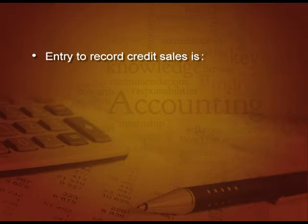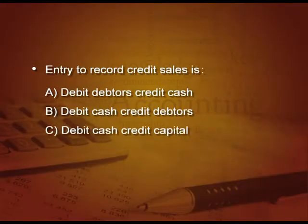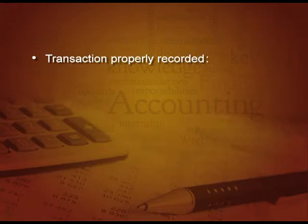Next question: entry to record the credit sale is — A: debit debtor credit cash, B: debit cash credit debtors, C: debit cash credit capital, and D: debit debtors and credit sales. The answer is D, because when we make a sales entry, it is party account debit to sales.